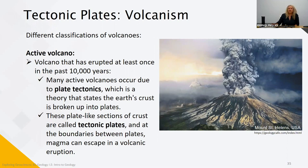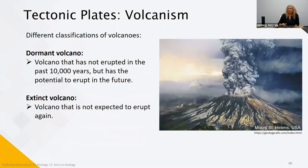Volcanoes are classified into three categories. Active volcanoes have erupted at least once in the past 10,000 years — there are many along tectonic plate boundaries where magma can escape in volcanic eruptions. Dormant volcanoes have not erupted in the past 10,000 years but have the potential to erupt in the near future. And finally, extinct volcanoes are those we don't expect to erupt again.